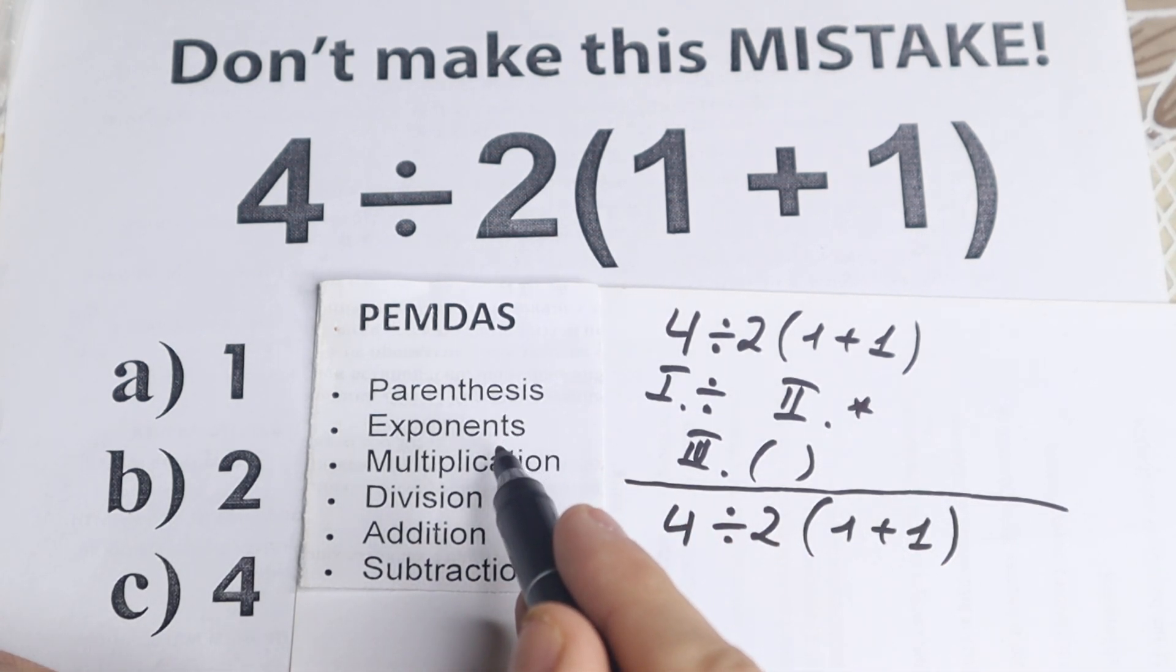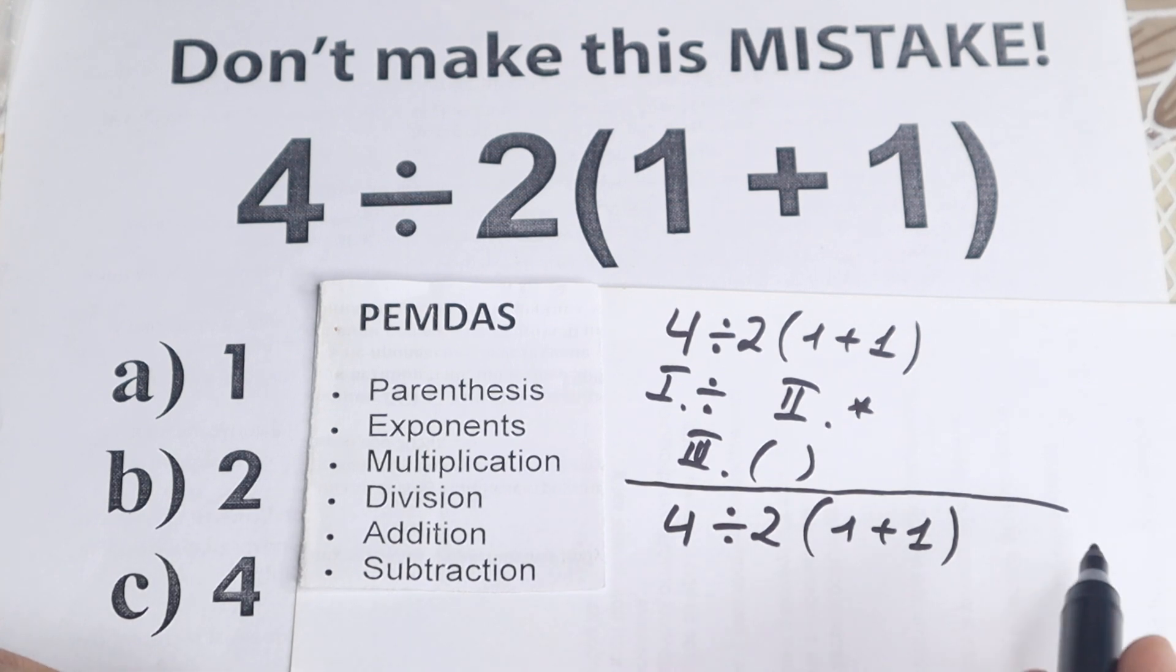Okay, so the first step according to PEMDAS is parentheses. So really good because we start with this parentheses: 1 plus 1 equal to 2. And in the beginning we have 4 divided by 2 times 2.